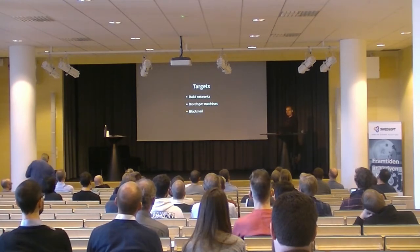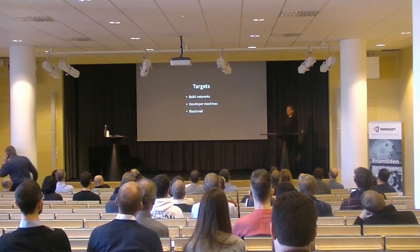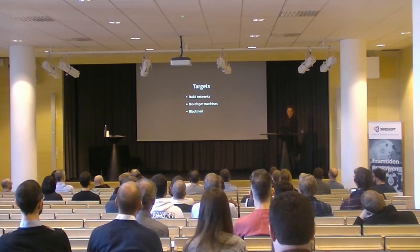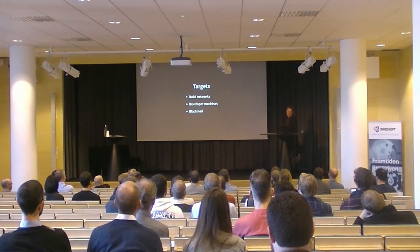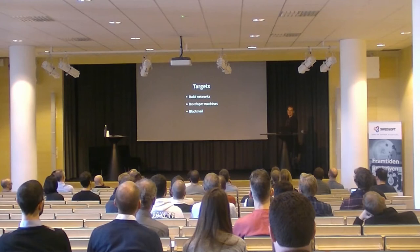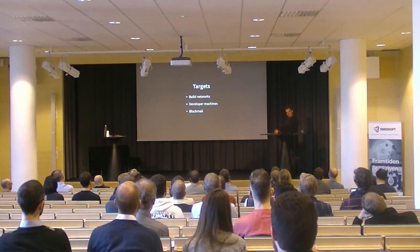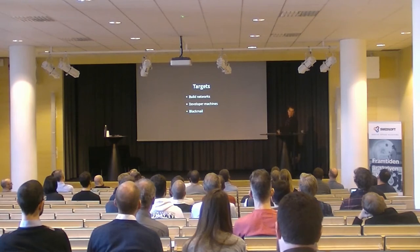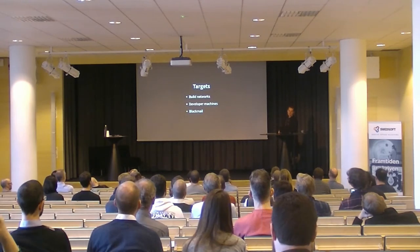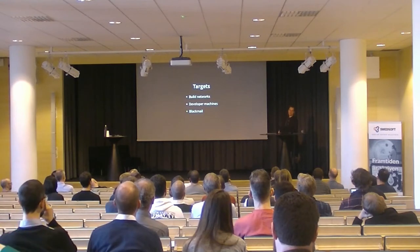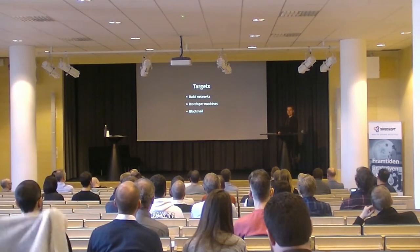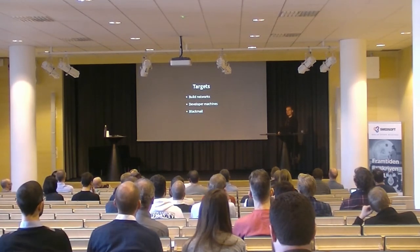It goes worse than that. Quite cheaply, with the right people, you could send someone around to a Bitcoin wallet developer's apartment and say: you don't want anything nasty to happen to your family. Perhaps you just want to publish this slightly different source code when you upload, and we're not going to really tell you what it's about. Currently, anyone who distributes binaries is essentially a target for blackmail, because they can be co-opted into distributing corrupt binaries.